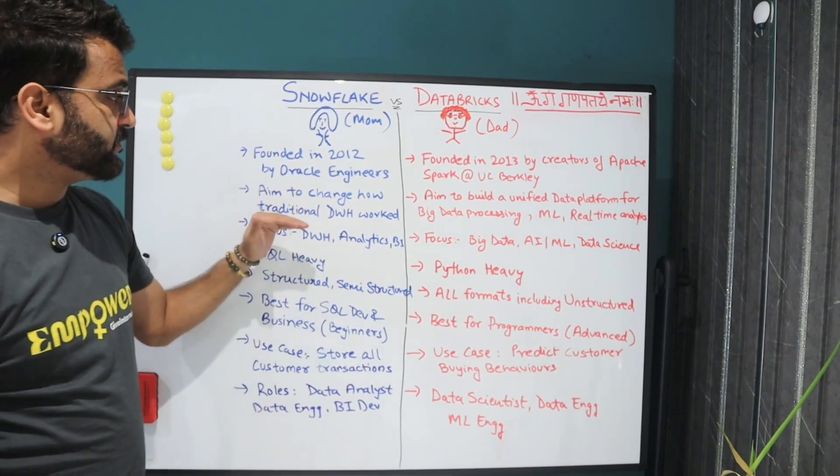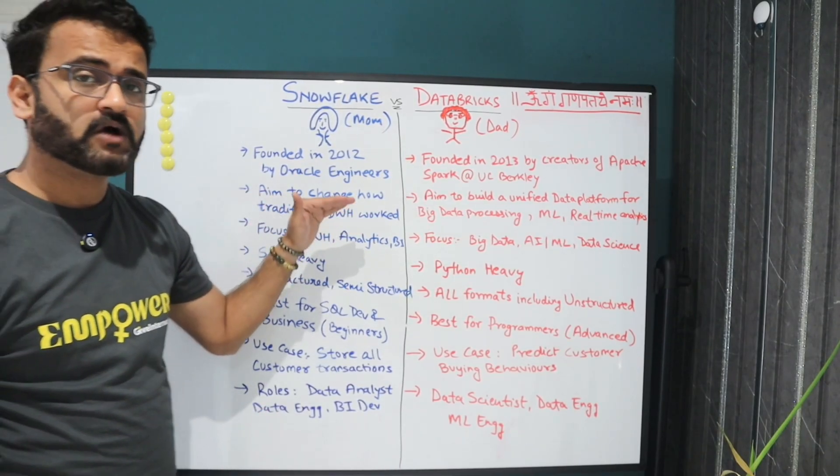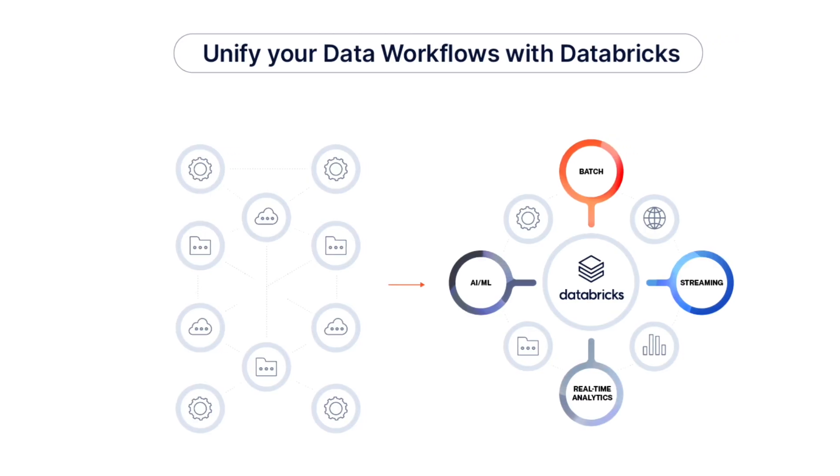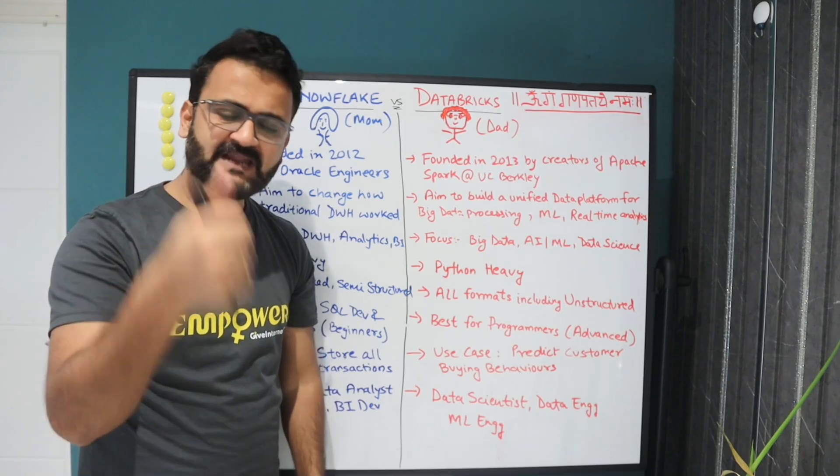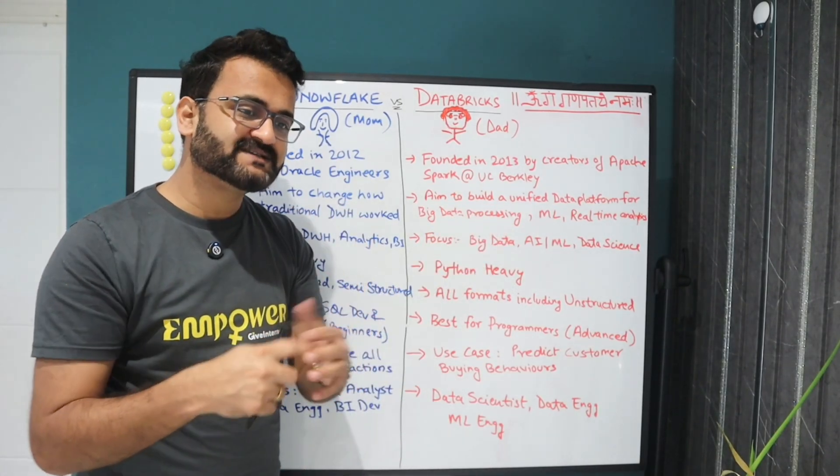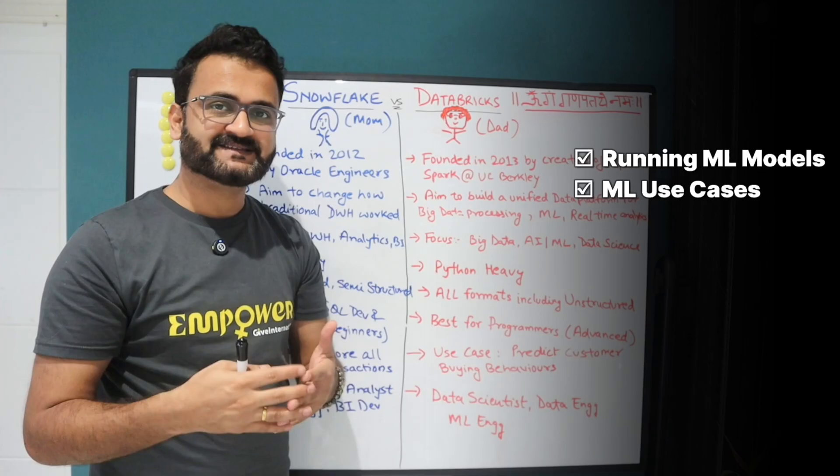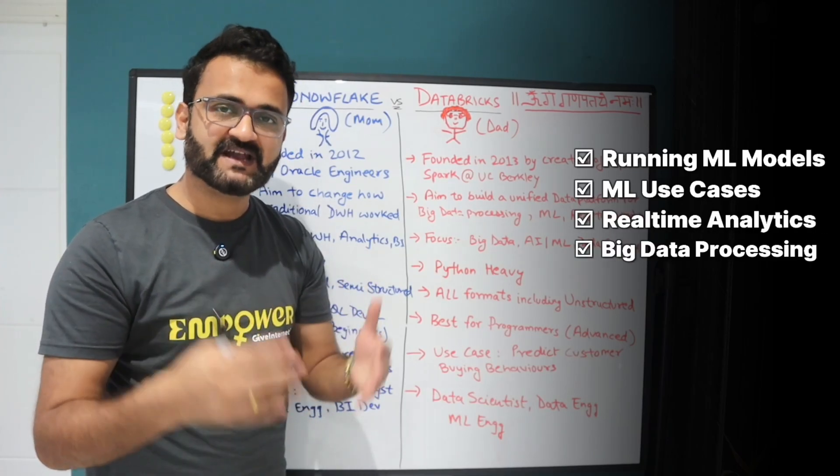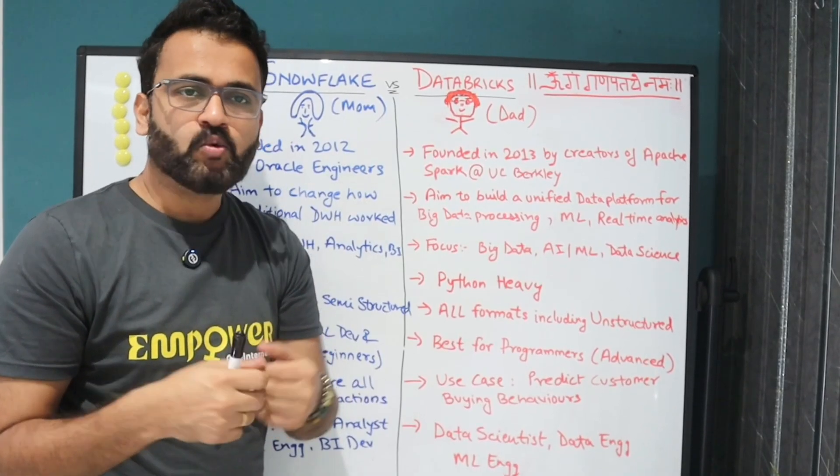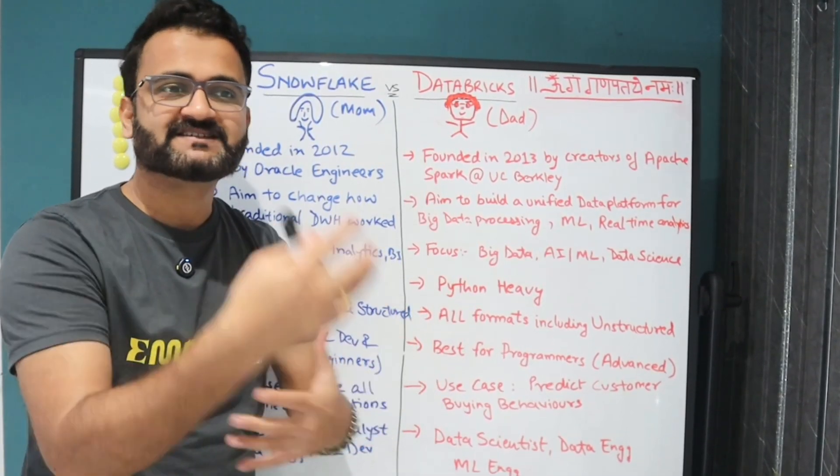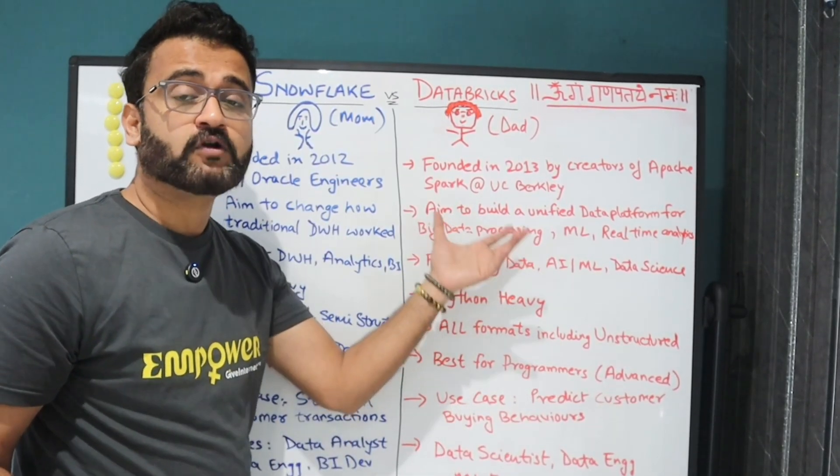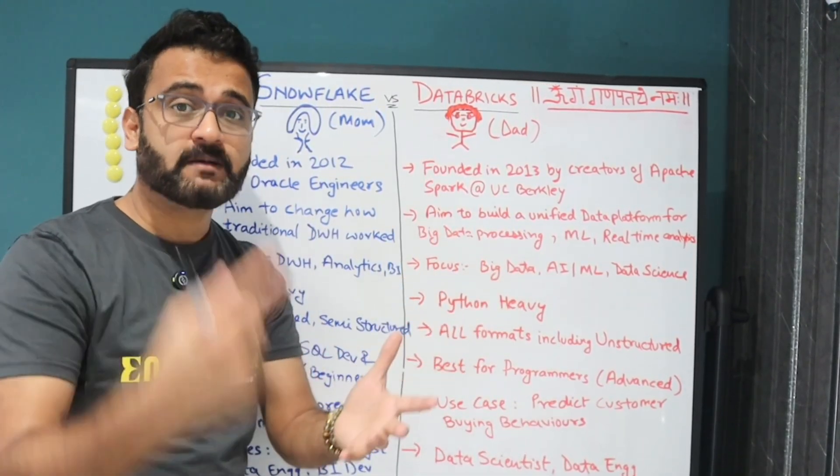What was their purpose? Their purpose was to change how traditional data warehouses work. But here the aim was different. It was building a unified big data processing platform where anyone could come in and start processing big data. That's why it was always focused towards running ML models, coming up with ML use cases, real-time analytics, big data processing. It was more developer driven. Developers thought how can we get into the world of data and start processing this data to create new machine learning models.